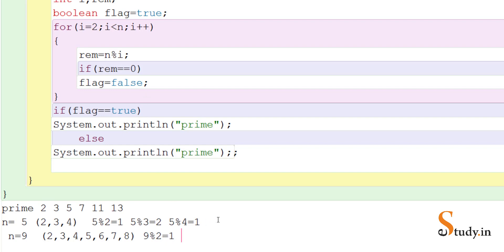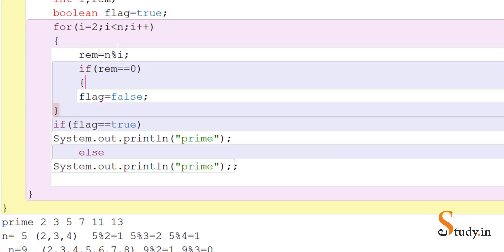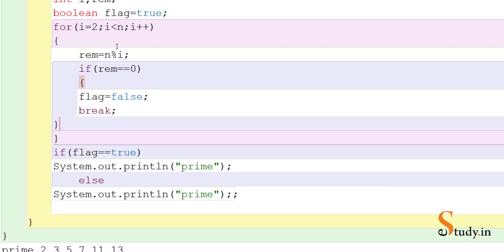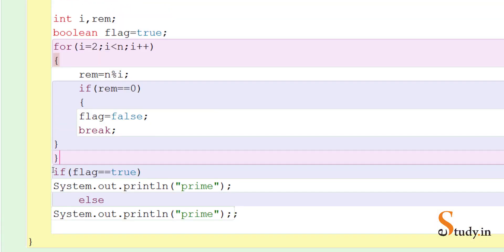Now i becomes three. We do nine mod three. When you divide nine by three, the remainder is zero. So the condition rem equals zero is true, and it changes the value of flag to false. Now we know this is not a prime number, so there is no need to continue the loop. We can add a break inside the if — the moment flag becomes false, break exits the for loop.